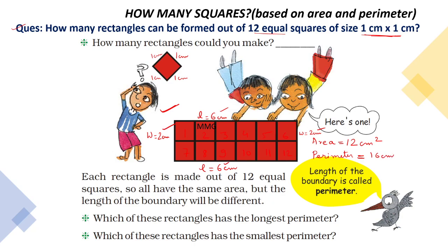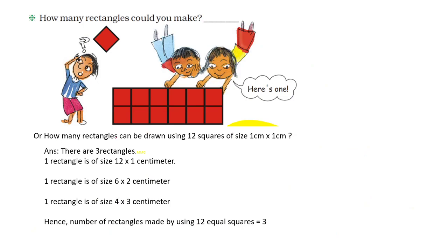Now one by one we will solve all the questions. How many rectangles can be drawn using 12 equal squares of size 1 cm into 1 cm? You can draw 3 rectangles: one rectangle of size 12 into 1 cm, another 6 into 2 cm, and a third one of 4 into 3 cm. So the number of rectangles made using 12 equal squares is 3.